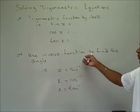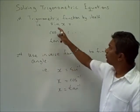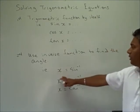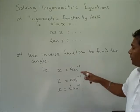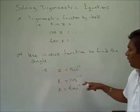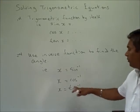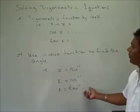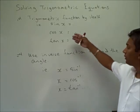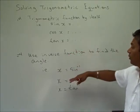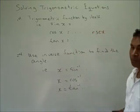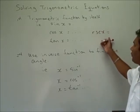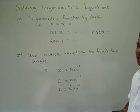Then we're going to use our inverse function to find the angle. So x will be the arc sine, or the arc cosine, or the arc tan of whatever we have. If our functions were in terms of cosecant — if we have cosecant x — we could use the inverse of cosecant, which is 1 over sine, and then find the arc sine of x.